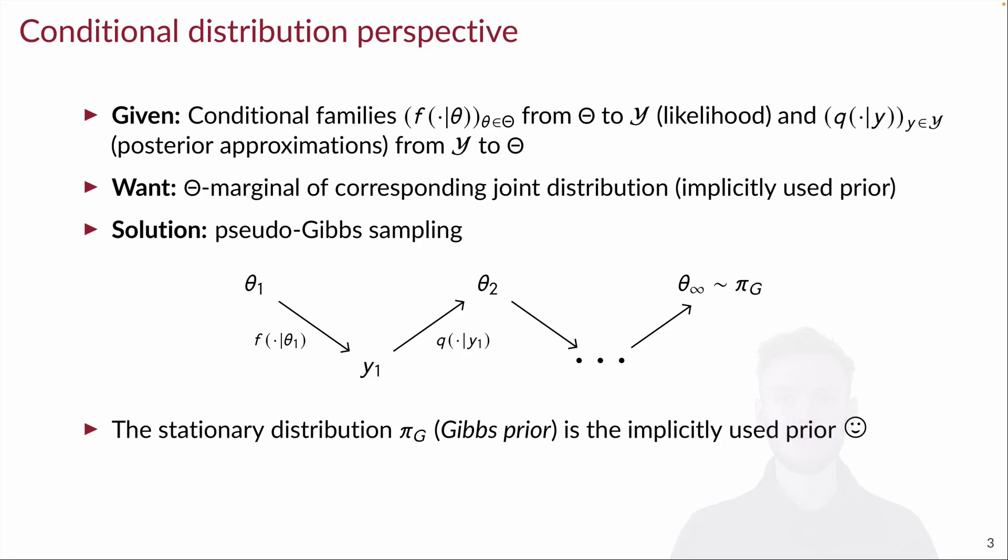A standard way to access a distribution if we only know its conditionals is pseudo-Gibbs sampling. Pseudo-Gibbs sampling defines a Markov chain by alternatingly sampling from these two conditionals. And the stationary distribution of this Markov chain is then exactly this joint distribution.